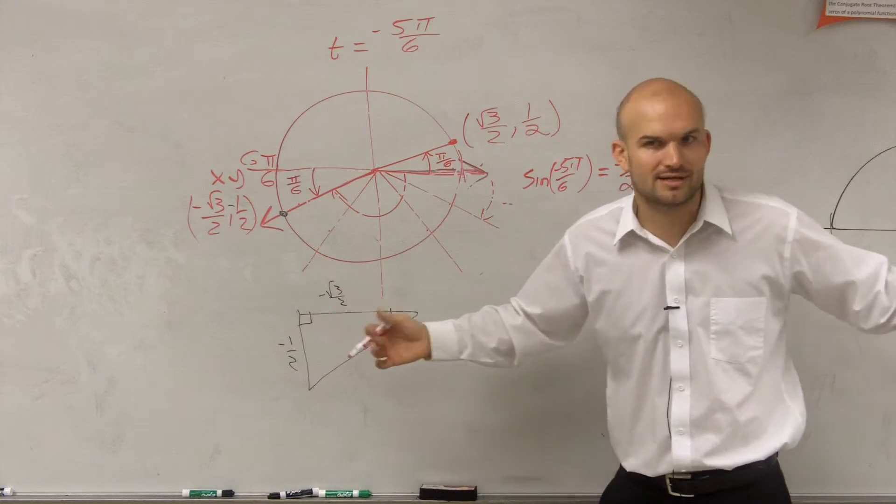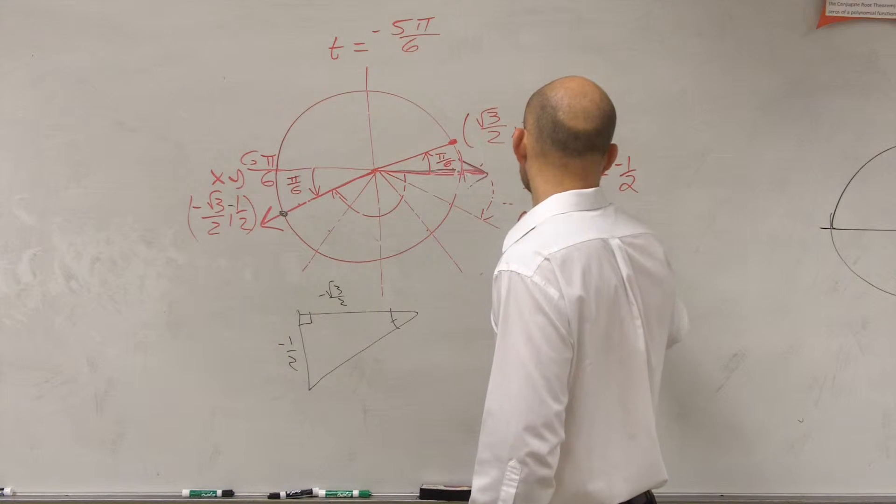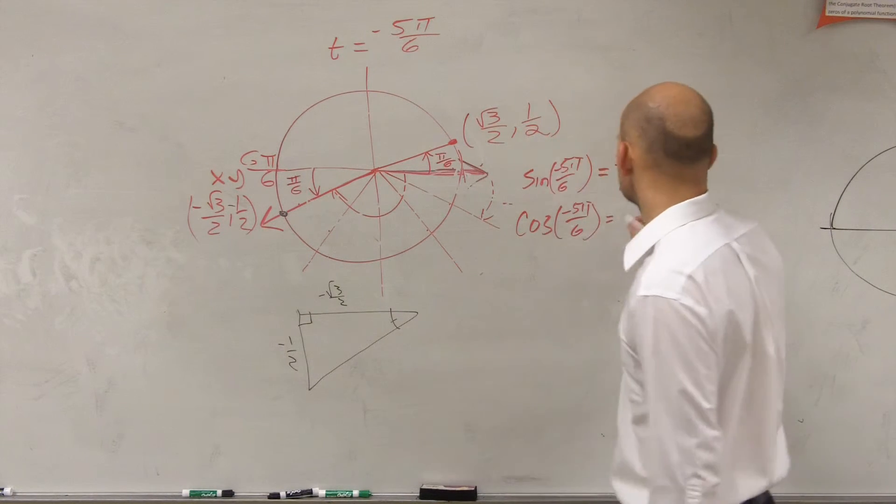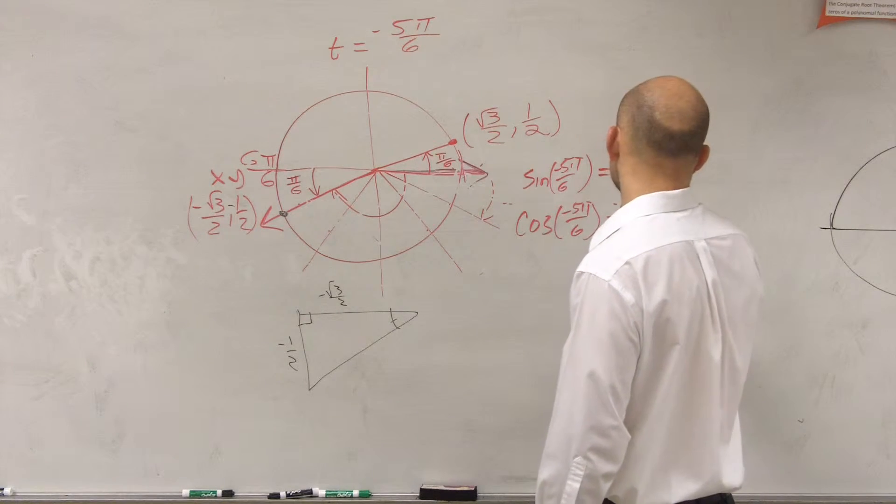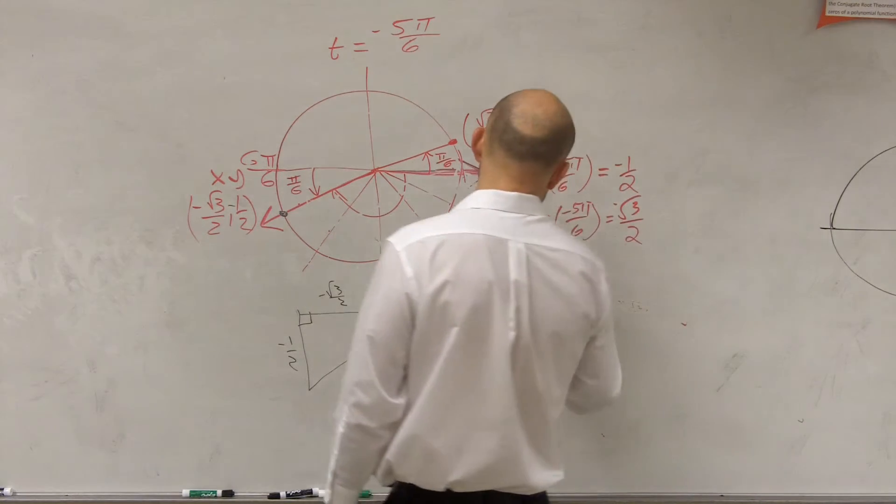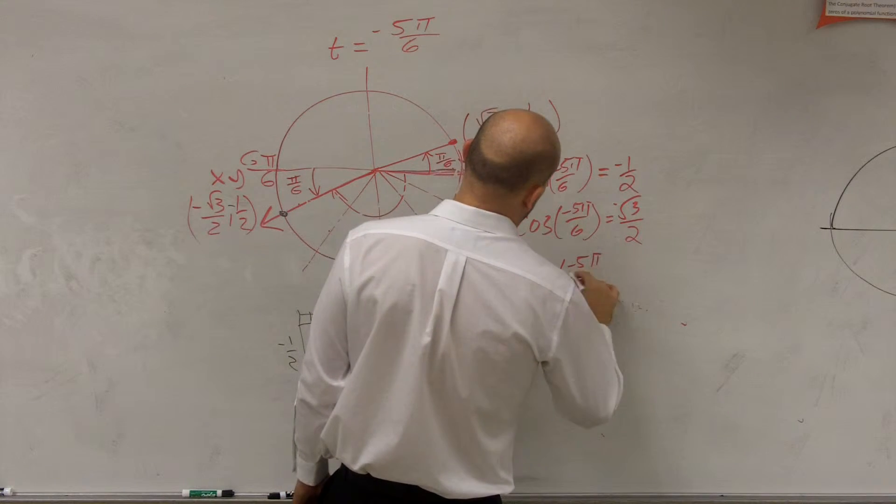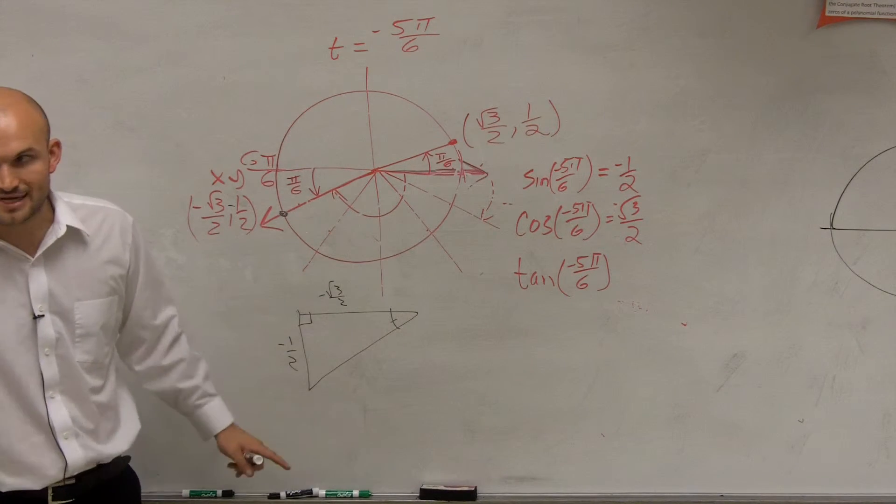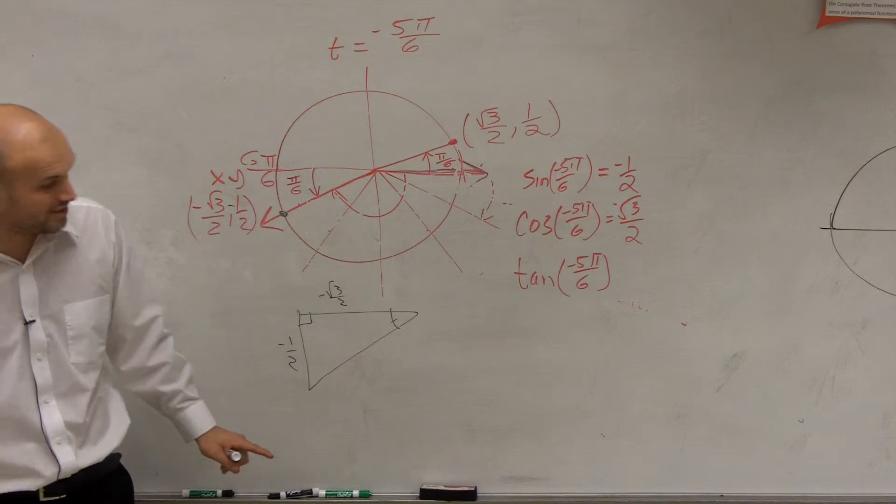Then your cosine of negative 5 pi over 6 equals square root, or negative square root of 3 over 2, and your tangent of negative 5 pi over 6 relates to your opposite over your adjacent. You guys need to pay attention for this. Jonathan, really important.